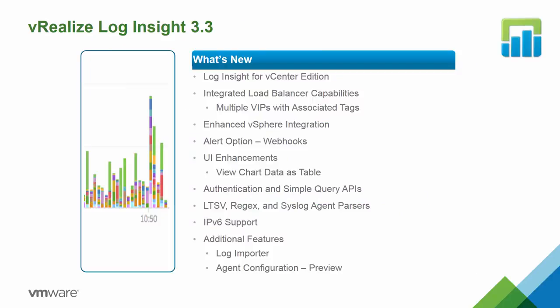What's new specifically in version 3.3 includes Log Insight for vCenter, where you get 25 OSI licenses of Log Insight when you purchase vCenter Standard — something relatively new from the second quarter of this year. It also has an integrated load balancer capability, alert options using webhooks, user interface enhancements such as viewing chart data as a table, authentication and simple query APIs, support for IP version 6, a new log importer, and a tech preview for an agent configuration tool.